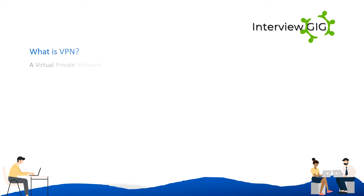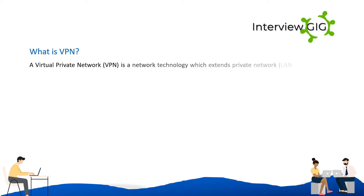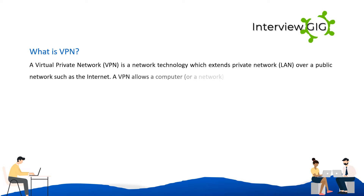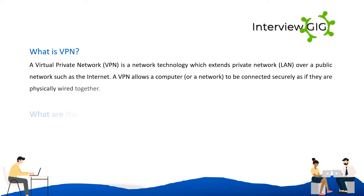What is a VPN? A Virtual Private Network (VPN) is a network technology which extends a private network LAN over a public network such as the internet. A VPN allows a computer or network to be connected securely as if they are physically wired together.